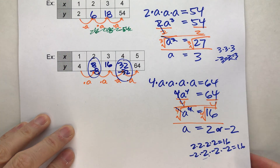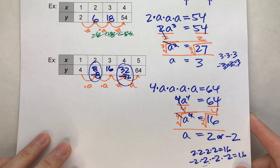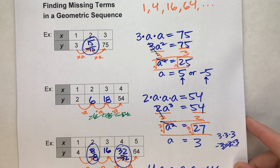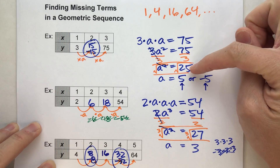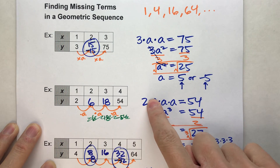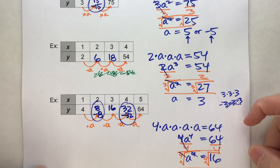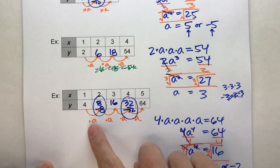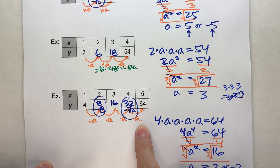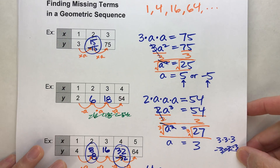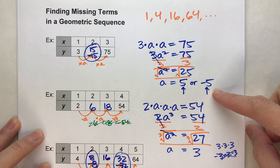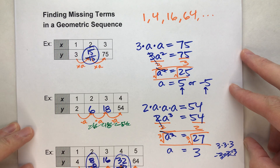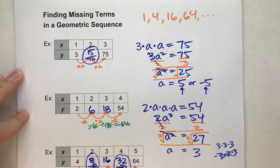When looking for missing terms in a geometric sequence, it's trickier than arithmetic sequences because we have to think about square roots, cube roots, or fourth roots depending on how many terms apart the known values are. Set up an equation, solve it step by step, and don't forget to check if there are two possible answers. Hopefully you found this helpful — please hit like and subscribe, good luck on your math, and I'll see you next time.